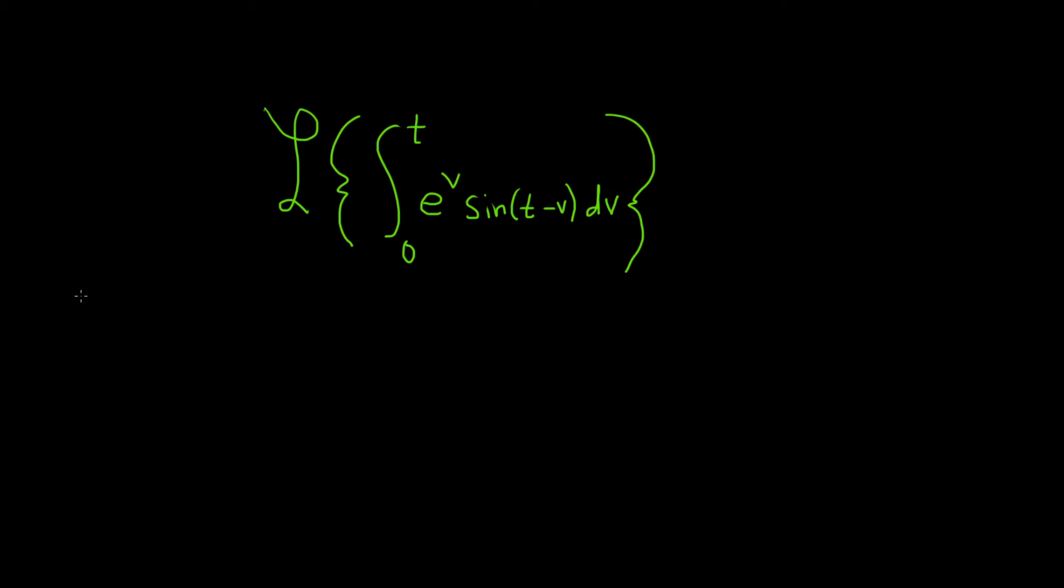So if you have two functions, say f and g, and you star them, by star we mean the following operation called convolution. This is equal to the definite integral from 0 to t of f of v times g of t minus v dv.